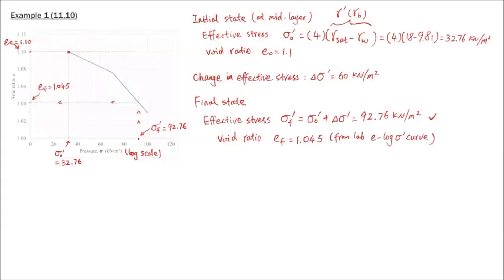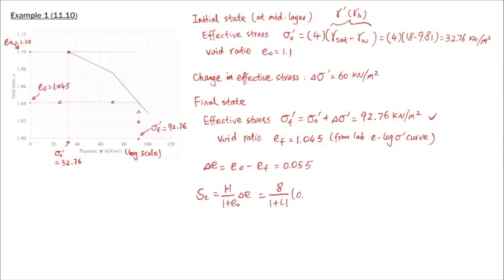Once we identify the final void ratio, the change in void ratio delta-e equals e-naught minus e-F, which is 0.055. Then we calculate the primary consolidation settlement Sc. Here H is the thickness of the entire consolidating layer — not the depth where the sample was taken, but the full layer thickness. So it's 8 meters divided by (1 plus 1.1), times 0.055, giving a primary consolidation of 0.21 meters due to the 60 kN/m² surcharge. To emphasize: H is 8 meters, not 4 meters.